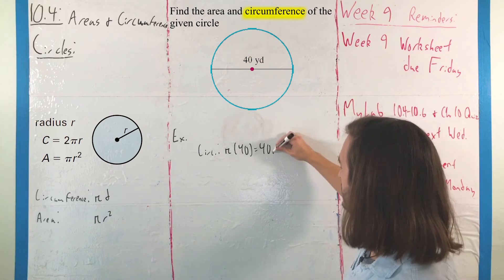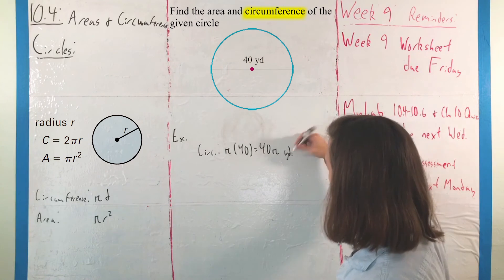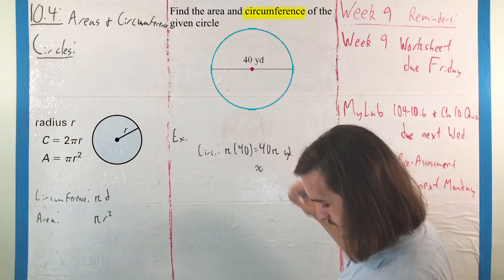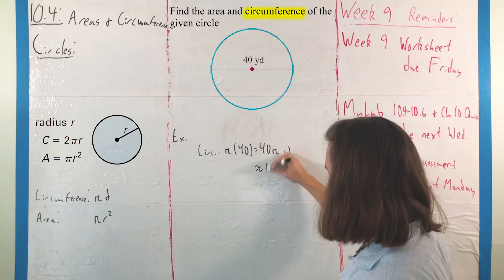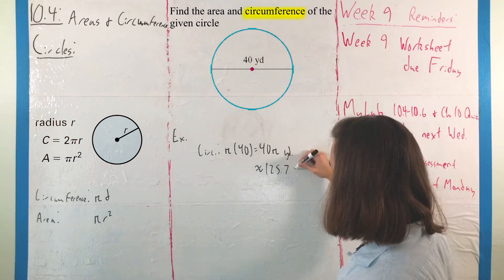Usually, when we have stuff like this, it's a bit cleaner to leave it in terms of pi, so you would say this is 40 pi yards, or you can approximate this as about 125.7 yards.